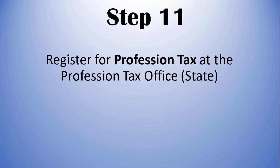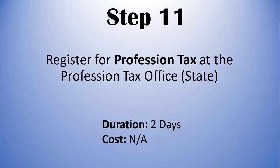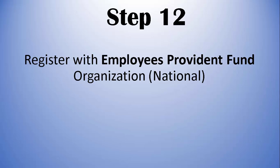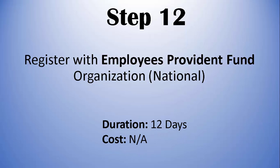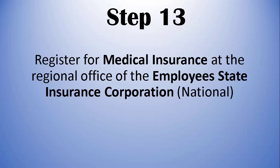Step 11: Register for professional tax at the professional tax office of your state. Duration is two days and cost is not applicable — you have to check it with your state department. Step 12: Register with the Employees Provident Fund Organization, which is a national organization. Submit an application to them. Duration is 12 days and cost is not applicable.